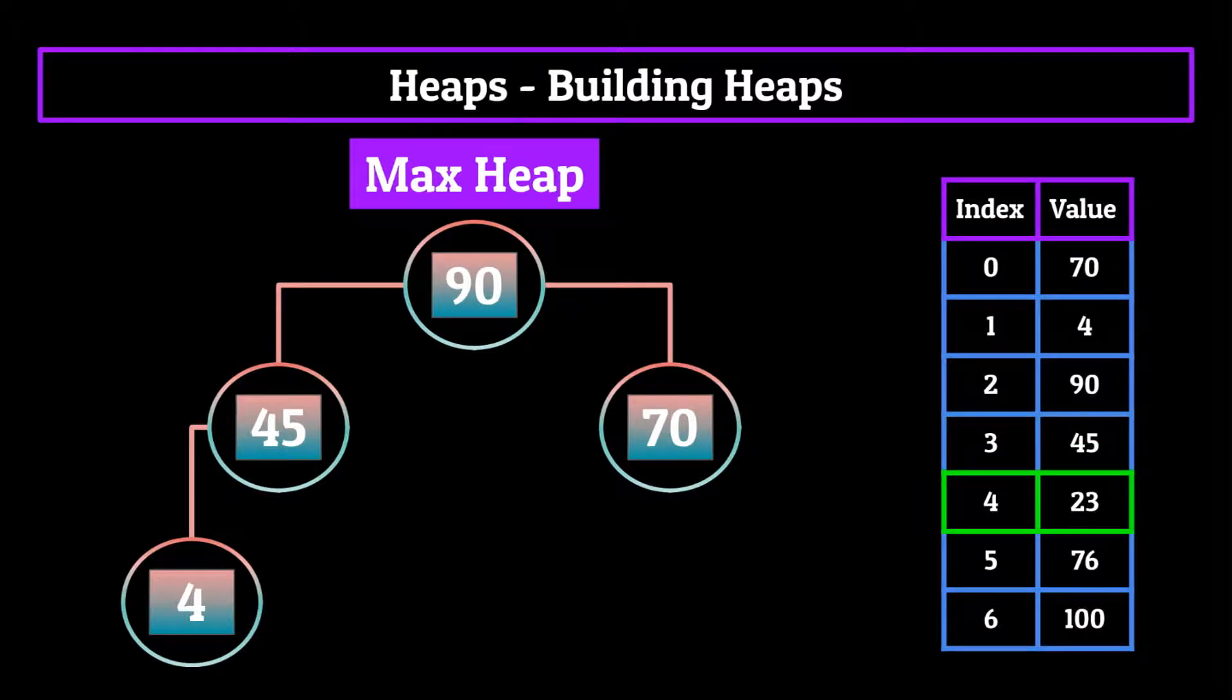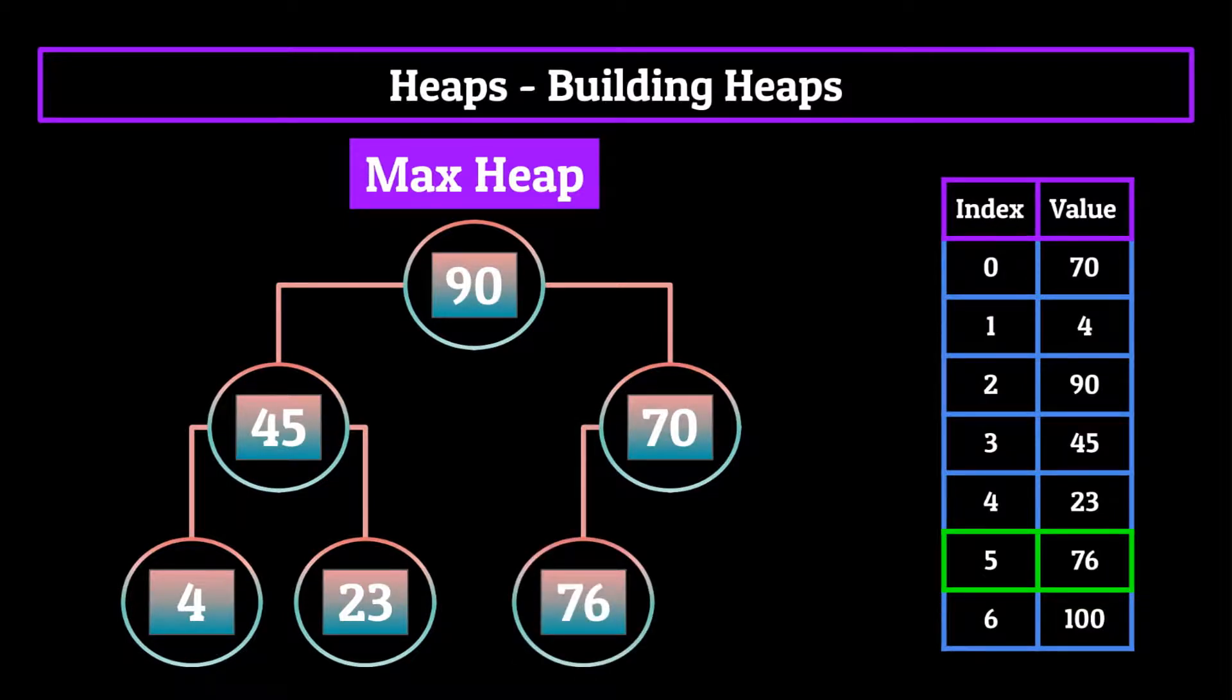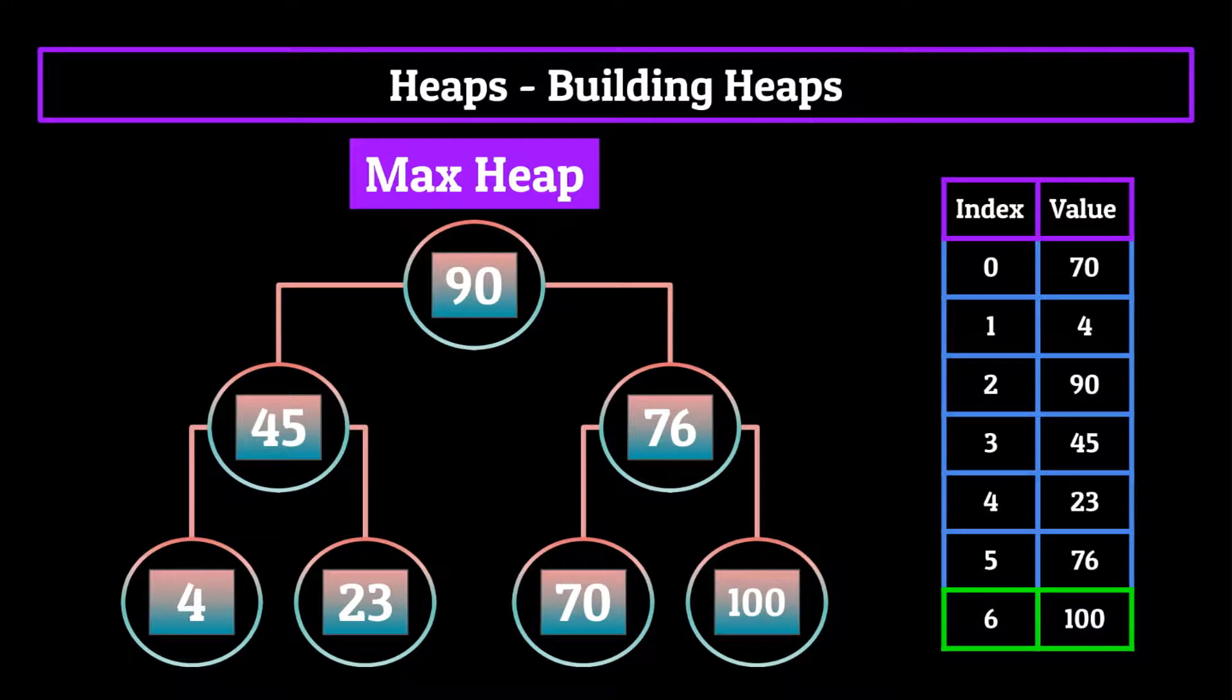Next up, we add 23 as another child of the 45 node. And since it's not greater than 45, we keep it as is. Moving on, we insert 76 into the tree as a child of the 70 node. And then we would swap the 76 and 70 nodes as 76 is indeed greater than 70. You'll notice we moved to the right part of the heap now, because each node can only have two children. The next node we add is the 100 node, we compare it to the 76 node and see that it's greater, so it gets swapped. And then we would compare it again, this time to the 90 node. And since again, it is greater than that integer, it gets swapped. And there we have our completed heap.